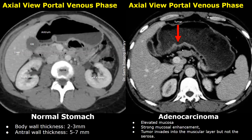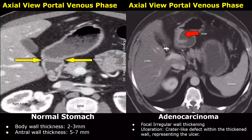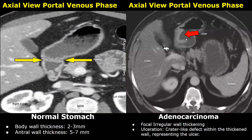This is another image showing an irregular focal wall thickening in the stomach. If the wall thickening or mass shows a crater-like defect — a concave-shaped defect — it usually suggests ulceration. You can see this concave-shaped, crater-like defect within the tumor; this type of appearance suggests ulceration. This is an ulcer.